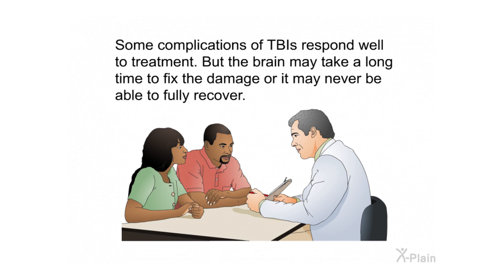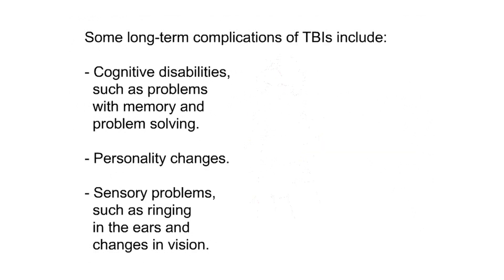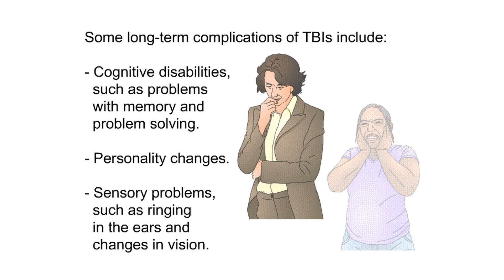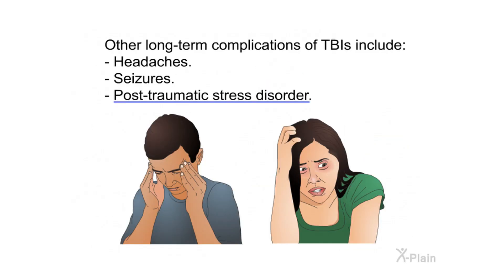Some complications of TBIs respond well to treatment, but the brain may take a long time to fix the damage, or it may never fully recover. Some long-term complications of TBIs include cognitive disabilities such as problems with memory and problem-solving, personality changes, sensory problems such as ringing in the ears and changes in vision, headaches, seizures, and post-traumatic stress disorder.